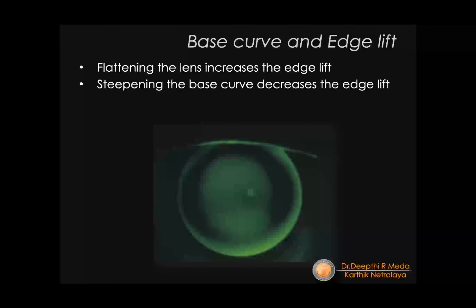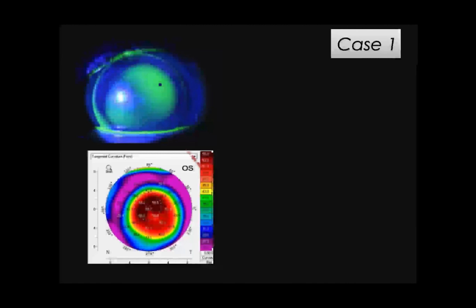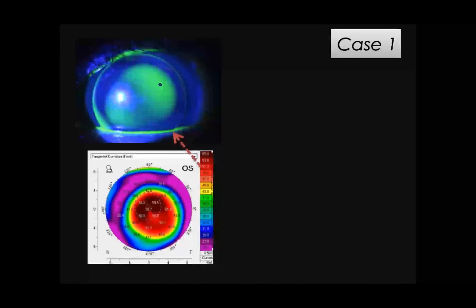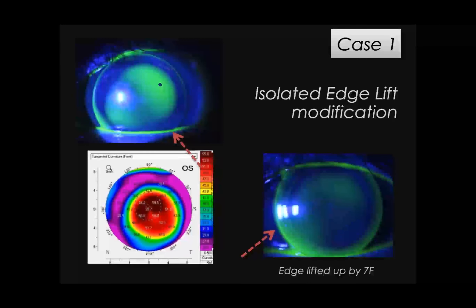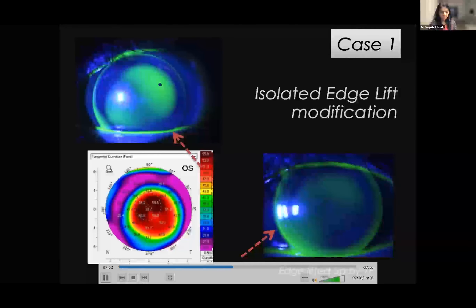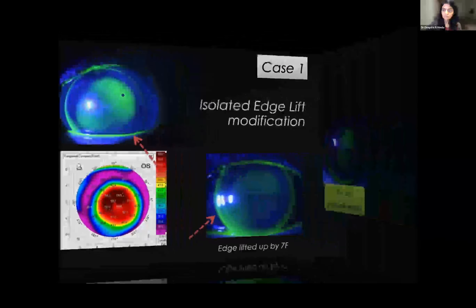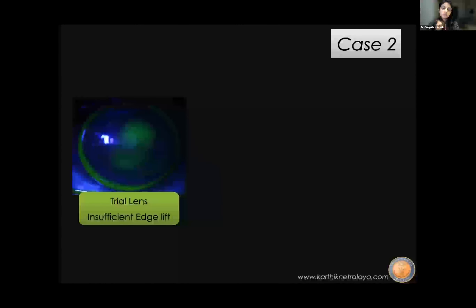For a central cone, the first trial lens may show decent central fit but insufficient edge lift. Requesting the company to increase edge lift gives the ideal 0.2–0.3 mm of fluorescein and good edge lift — never compromise on edge lift as it is essential for good tear exchange. In another case with too much edge lift, stepping one level down achieves the ideal fit.